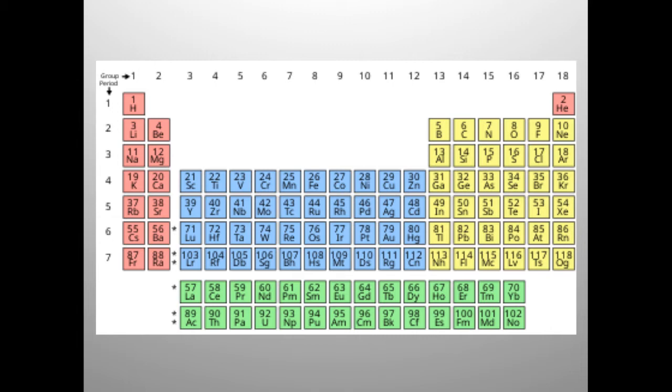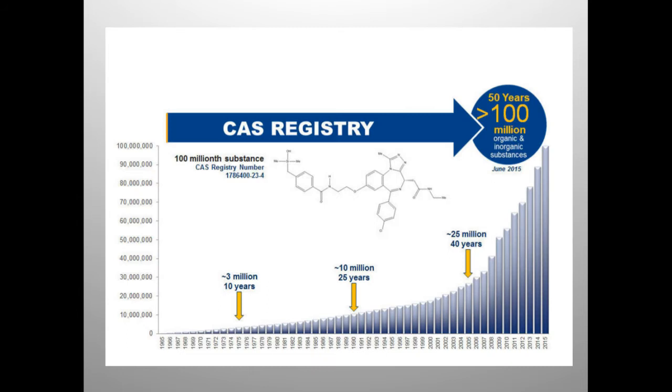As of 2021, there are 118 different kinds of atoms called elements — impressive, but minuscule compared to the number of molecules that can be made from combinations and arrangements of these elements. To give an idea, the Chemical Abstract Service, which assigns a unique CAS registry number to different chemicals, currently has a database of 177 million different chemical substances. These are just the molecules we've found or made; there are many more that will be made and could be made.